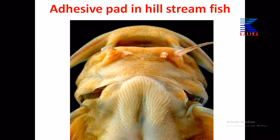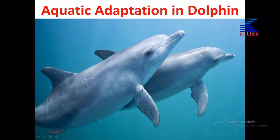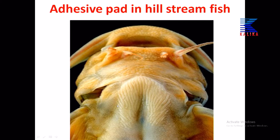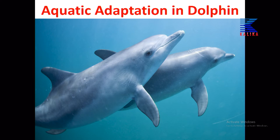This is a special aquatic adaptation where the pectoral fins are modified and developed as wings, enabling the fish to fly. Some hill-stream fishes have adhesive pads — because of these, the fish can hang onto rocks of hilly streams and not be washed away by the strong current flowing from uphill to downhill.